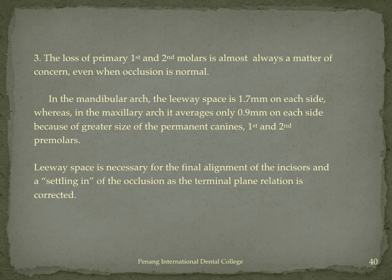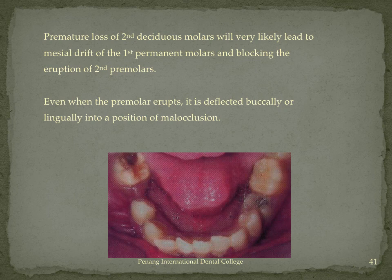Any posterior primary tooth lost prematurely is a big matter of concern. In the mandibular arch the leeway space is 1.7 mm on each side, whereas in the maxillary arch it averages only 0.9 mm on each side. This leeway space is essential for final alignment of the incisors and for settling of the occlusion as the terminal plane relation is corrected to achieve a Class I relationship. Premature loss of the second deciduous molar will very likely lead to mesial drift of the first permanent molar, blocking eruption of the underlying second premolar, decreasing arch length, and causing an abnormal molar relationship.